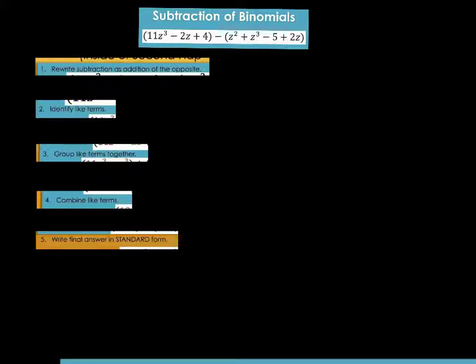The extra step is to pay attention to the minus sign. In order to do that, we can treat this minus sign as actually adding a negative 1. That negative 1 is essentially multiplying the z squared, the z to the third, the z to the negative 5, and the 2z. If that's the case, this whole back side can be rewritten, and that's what this first step is.